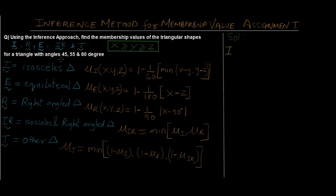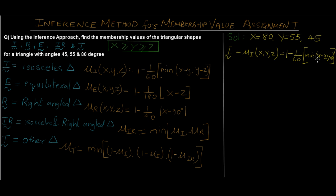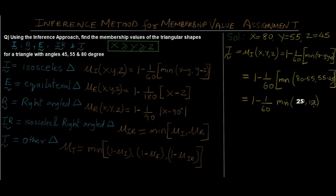For the isosceles triangle we've been given angles of 45, 55, and 80. So x is the largest angle, 80; y is 55; and z is 45, following the x ≥ y ≥ z rule. The membership value μ_I(x, y, z) = 1 − (1/60) × min(x − y, y − z). Substituting: 1 − (1/60) × min(80 − 55, 55 − 45) = 1 − (1/60) × min(25, 10). The minimum of 25 and 10 is 10, so we get 1 − (1/60) × 10 = 1 − 0.167 = 0.833. This is our final answer for the isosceles triangle.